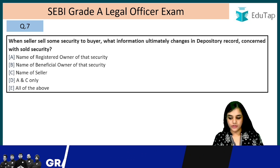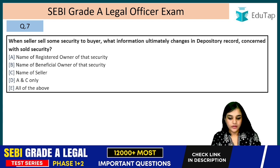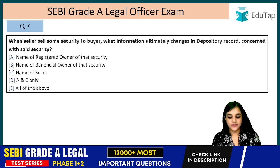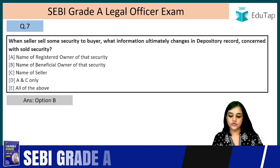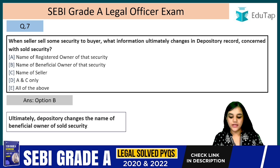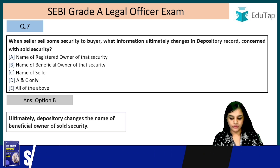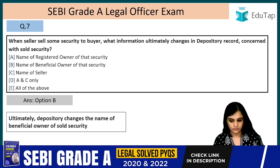Question 7: When a seller sells some security to a buyer, what information ultimately changes in the depository record concerning the sold security? The answer is option B — the name of the beneficial owner of the security. Ultimately, the depository changes the name of the beneficial owner of the sold security.